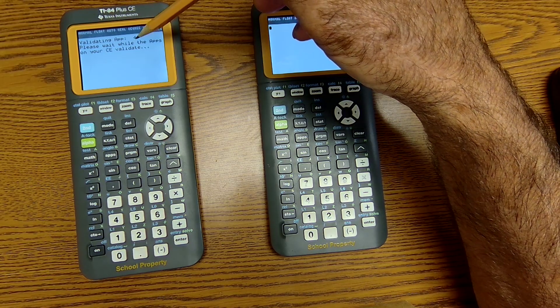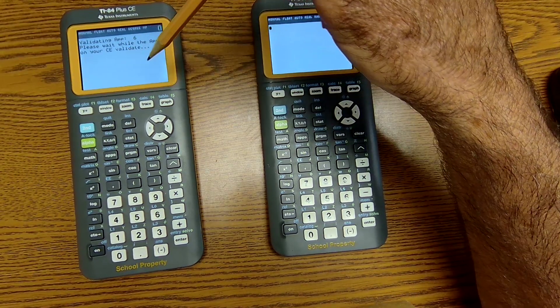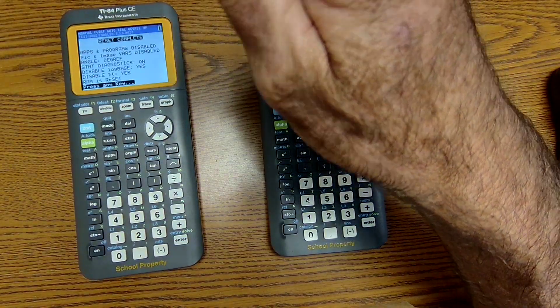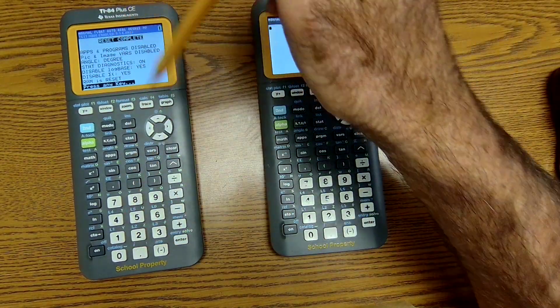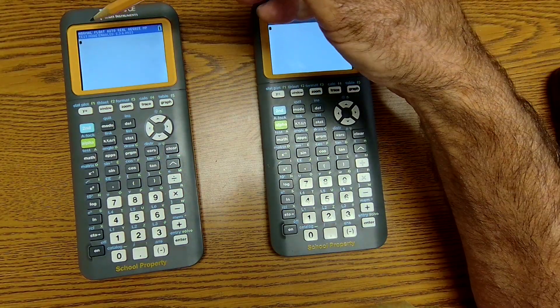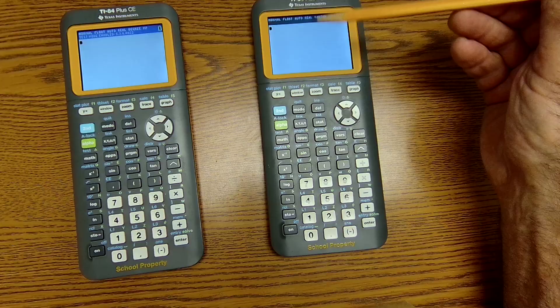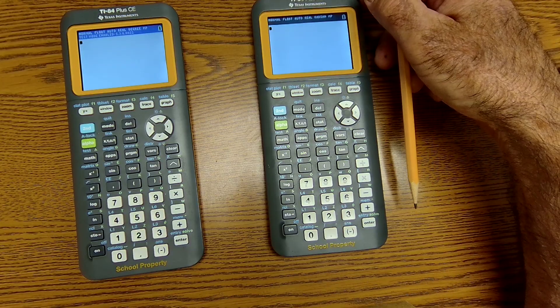So it's cycling through right there, validating the apps. It'll take a second to do that. So this calculator will be in test mode. It's telling you resets complete. Hit any number. And I can see it's in test mode. It puts up at the bar here. It says test mode. And then here, it does not say test mode.